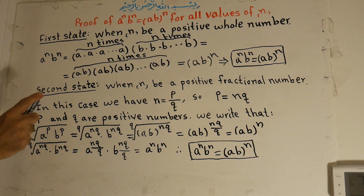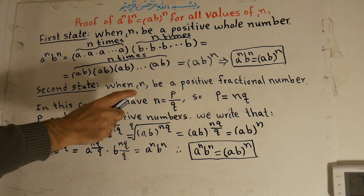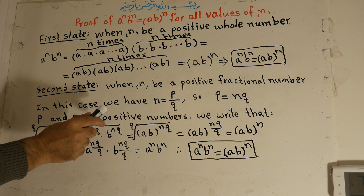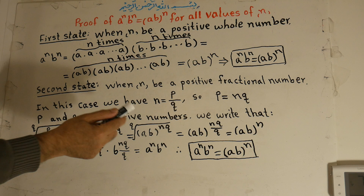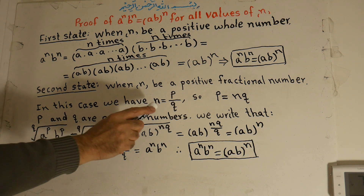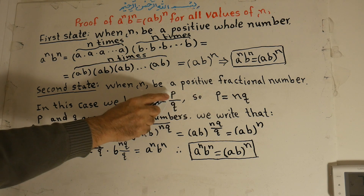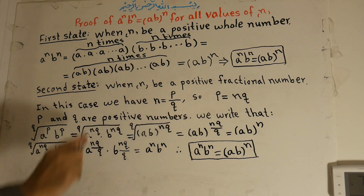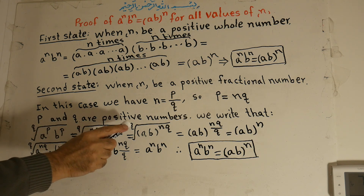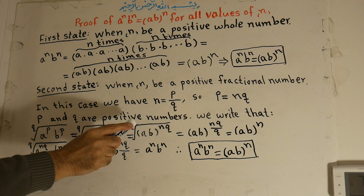Second case: when n is a positive fractional number. In this case we have n is equal to p over q. That means p is equal to n times q. And p and q are positive whole numbers.